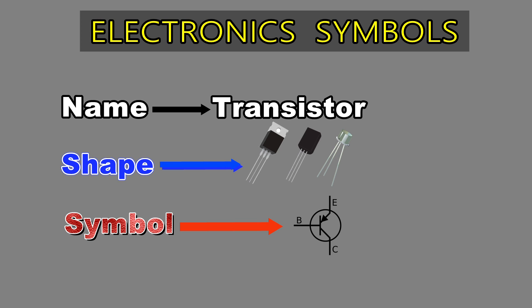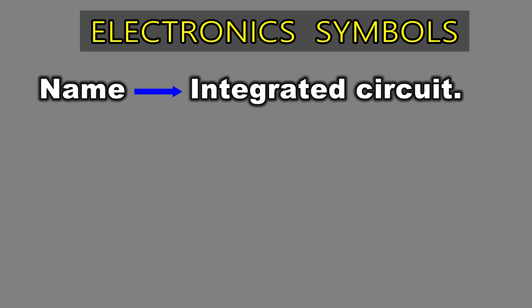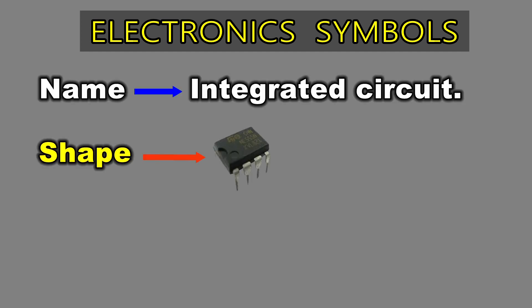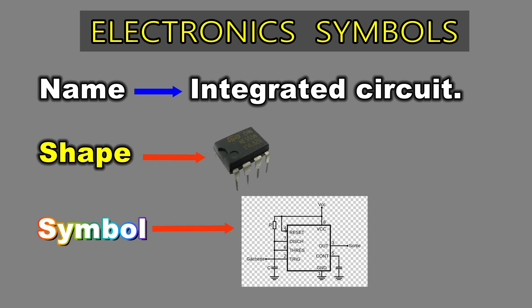A transistor consists of three layers of a semiconductor material, which is capable of carrying a current. An integrated circuit, or IC, is a small chip that can function as an amplifier, oscillator, timer, microprocessor, or even computer memory. An IC is a small wafer usually made of silicon that can hold anywhere from thousands to millions of transistors, resistors, and capacitors.